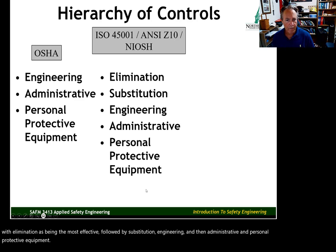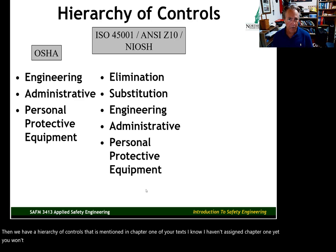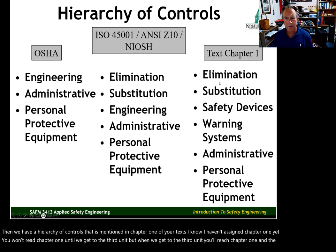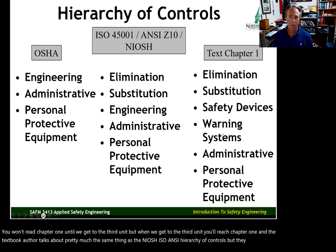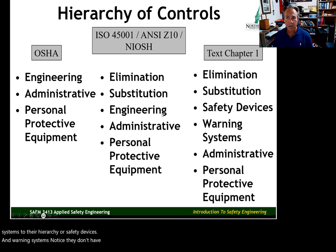There is also a hierarchy of controls mentioned in chapter one of your text — you won't read that until unit three. The textbook author covers pretty much the same thing as the NIOSH/ISO/ANSI hierarchy, but adds warning systems and safety devices. Notice they use 'safety devices and warning systems' instead of 'engineering controls.'